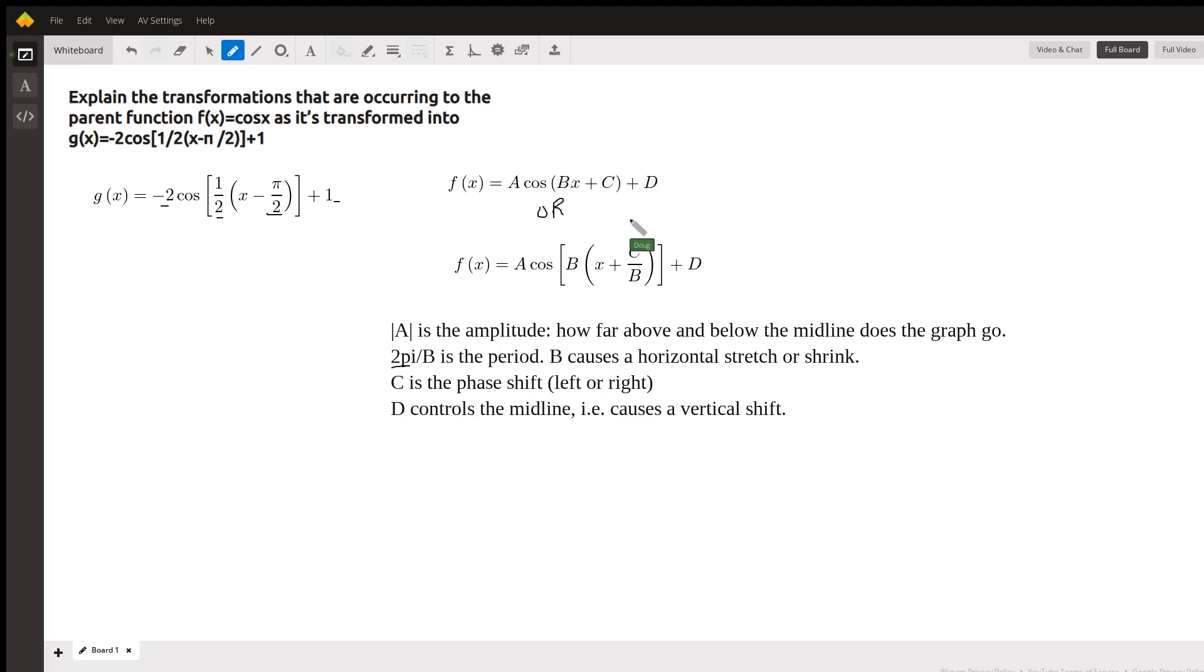C is the phase shift. When it's written this way, Bx + C, if you factor out the B, then C/B is the phase shift left or right—it's like a horizontal shift. And D controls the midline, that is, it causes a vertical shift. Now let me share my screen.